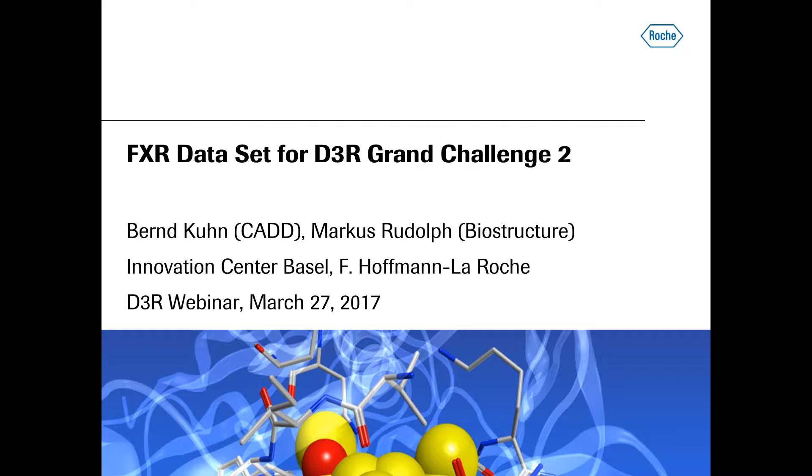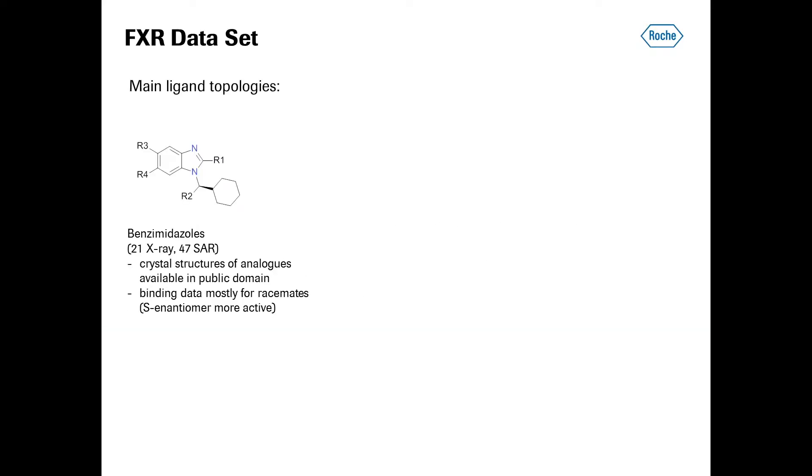Now, compared to other protein targets, there are some special elements in the FXR binding site, which makes it a very challenging target for computational predictions. FXR was a previous Roche target against dyslipidemia. During the course of the project, we worked on several different chemical classes. One class is shown here, these are benzimidazoles. In the data set, there is a total of 21 co-crystal structures with FXR and also 47 compounds with IC50 values. A few papers on FXR were published previously by us, and two of them comprise the benzimidazole class. So, the binding mode of the benzimidazole scaffold in FXR was known to the public at the beginning of that challenge.